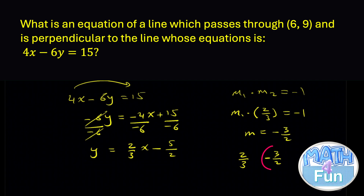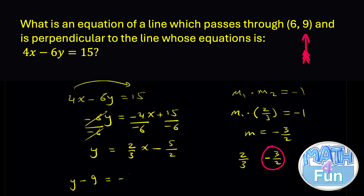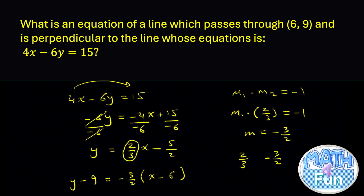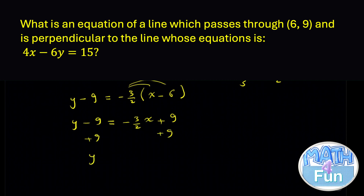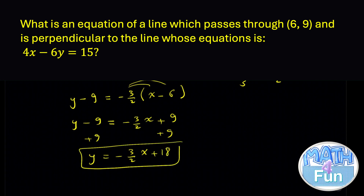Now write the equation using point-slope form through (6, 9) with slope -3/2: y - 9 = -3/2(x - 6). You can stop here, or simplify further. Distributing: y - 9 = -3/2 · x + 9. Adding 9 to both sides: y = -3/2 x + 18. The first form is point-slope; the second is slope-intercept.